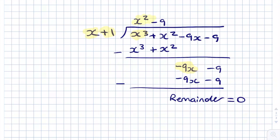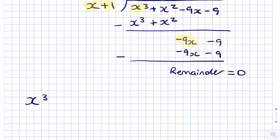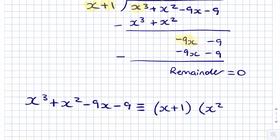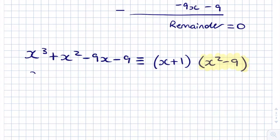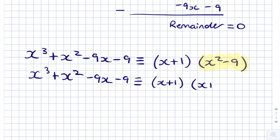The x² - 9 above is the quadratic equation we find when we divide our cubic by our linear factor. So x³ + x² - 9x - 9 is equivalent to (x + 1)(x² - 9). And since x² - 9 is the difference of two squares, we rewrite this as (x + 1)(x + 3)(x - 3) — the same answer we got using the method by inspection.